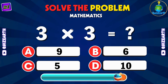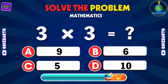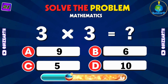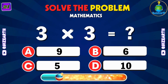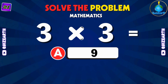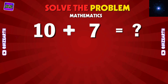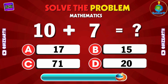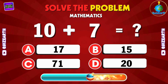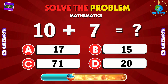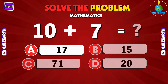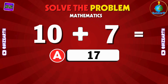Double trouble, triple trouble — what's 3 times 3? A: 9. Add 10 and 7 — what's the total? Time to calculate. A: 17.